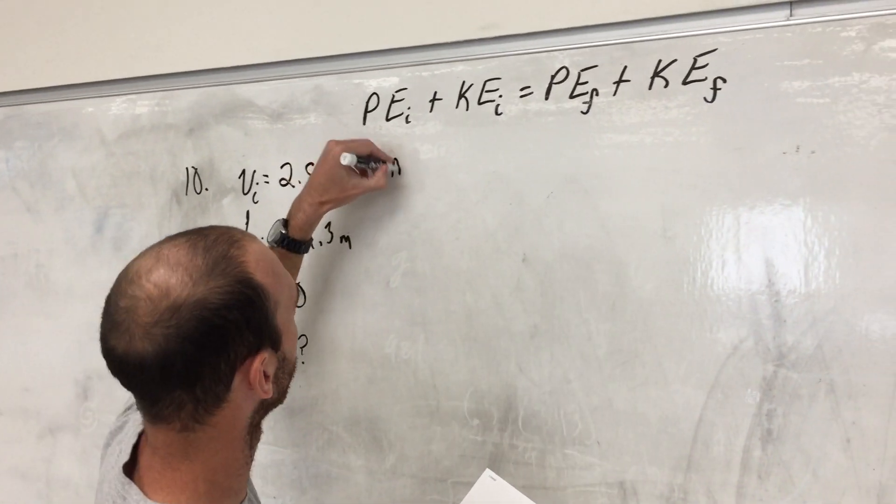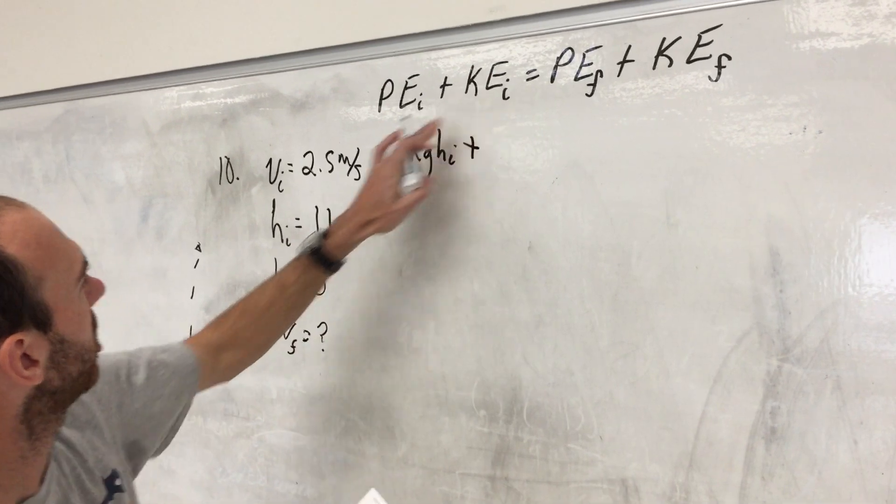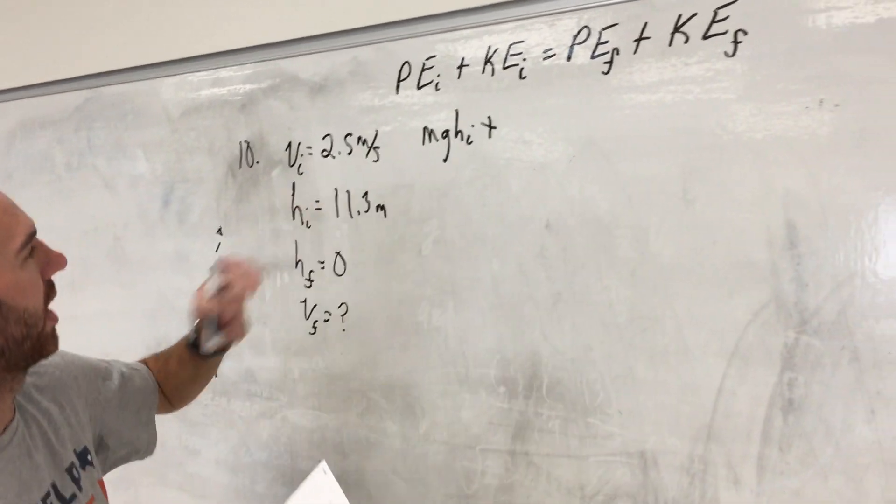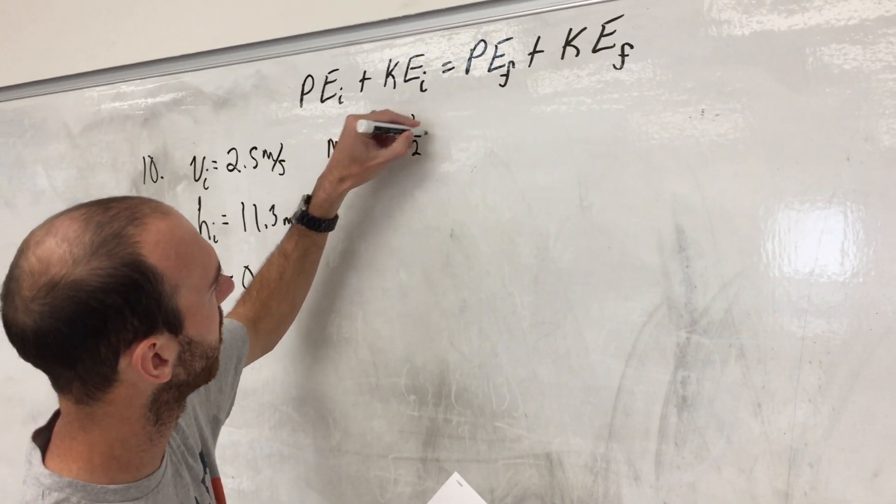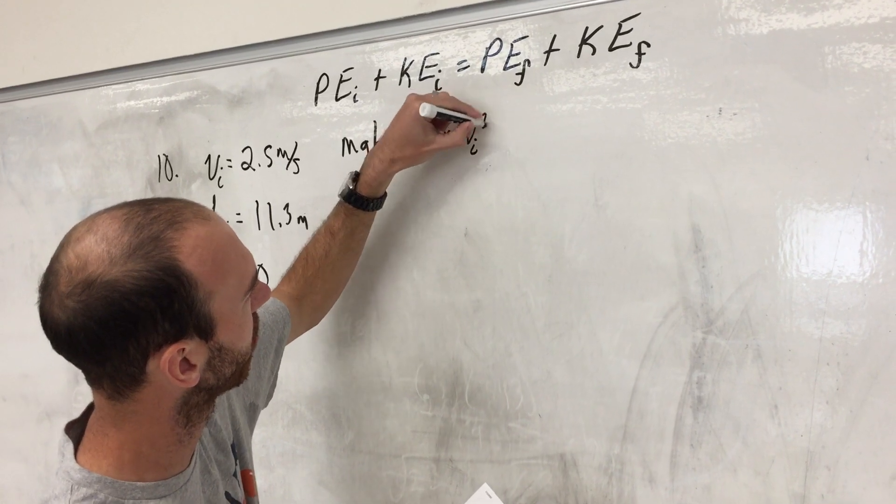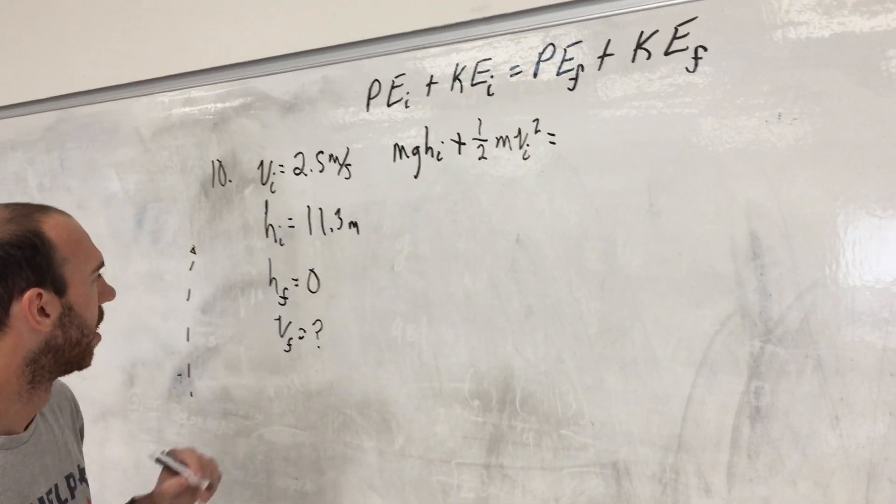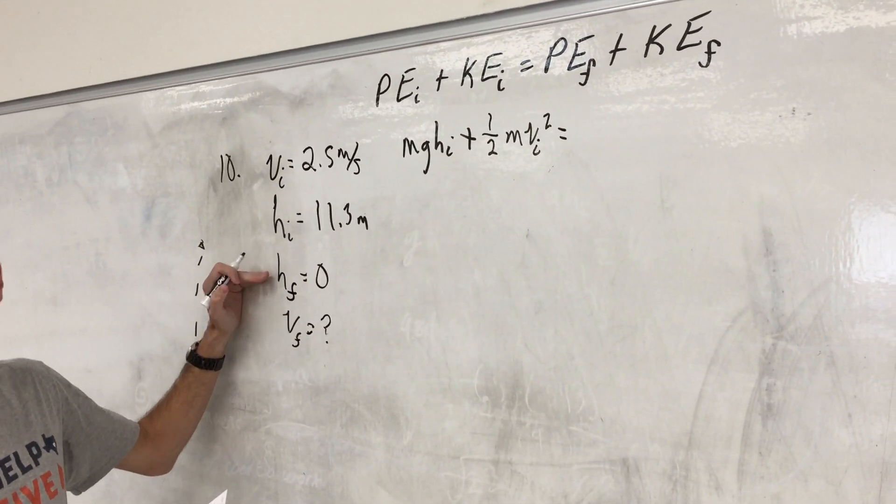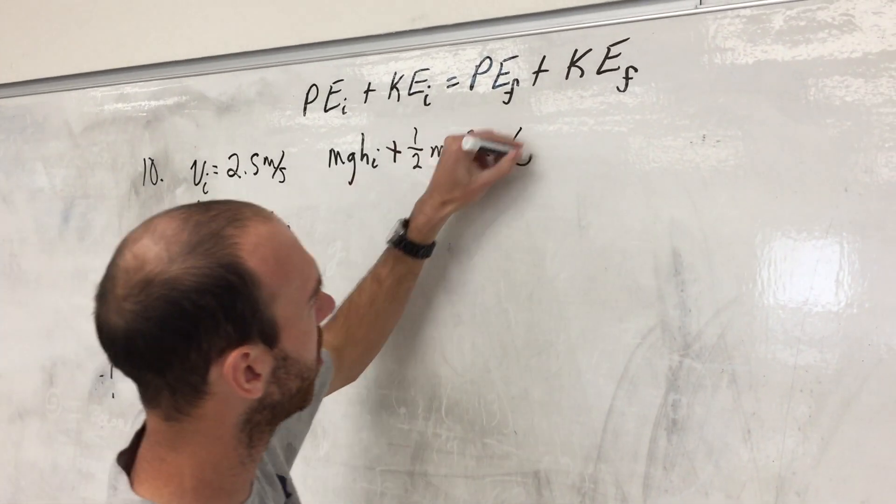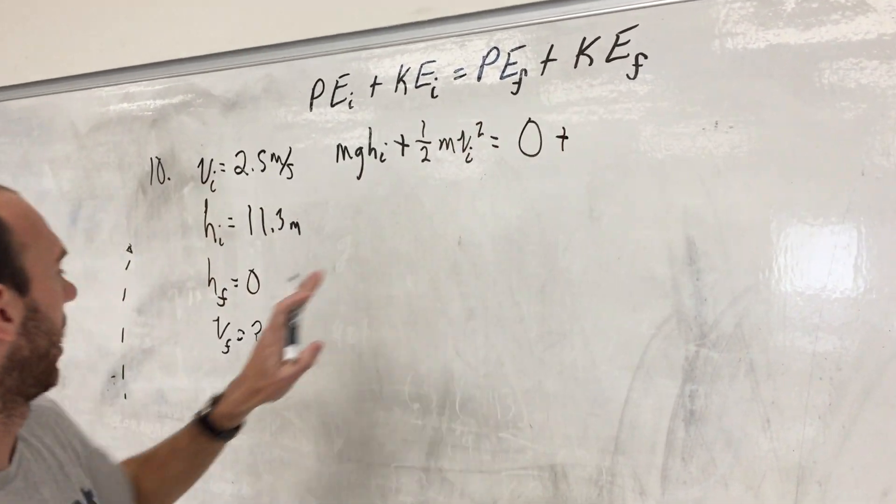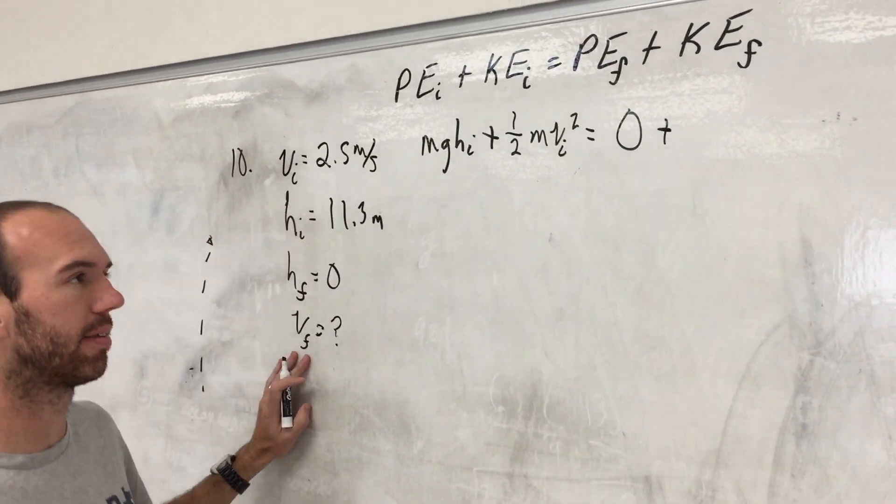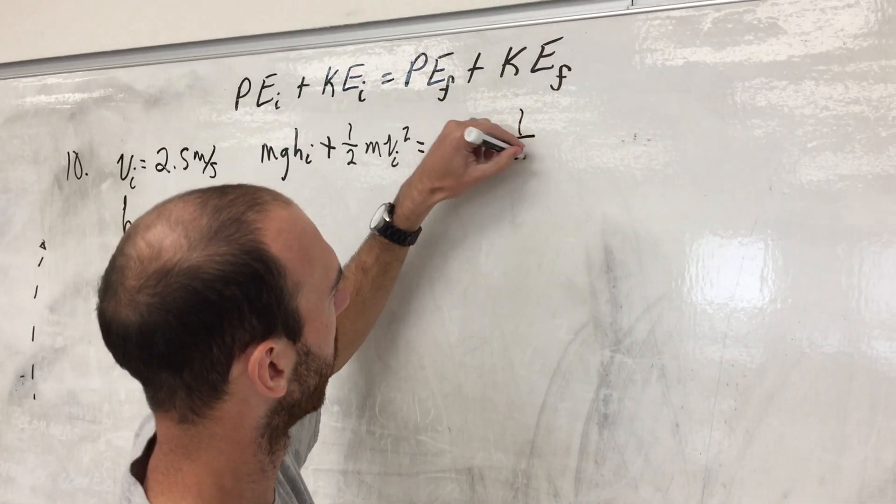Initial potential energy, yes we do have that because we have some height. Initial kinetic energy, yes we do have that because we are moving initially, we have an initial velocity that's not zero. Final potential energy, final potential energy zero because the height of Piglet is zero. And then final kinetic energy, yes we do have that, Piglet's moving, we're looking for that final speed.